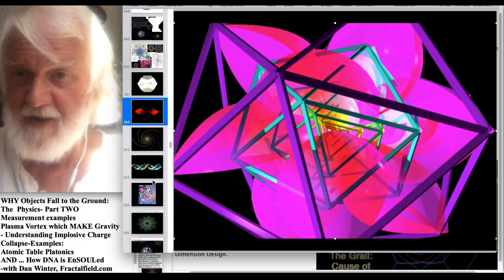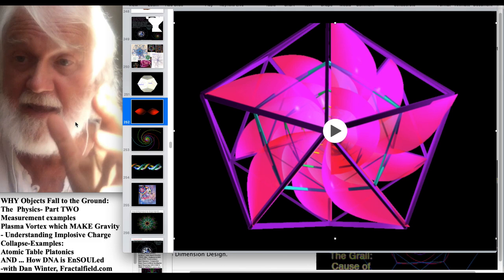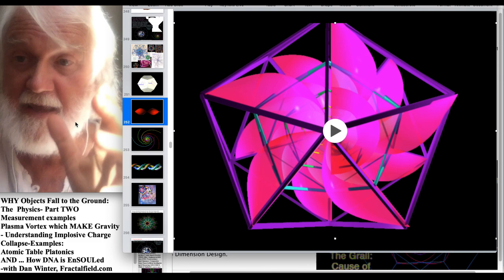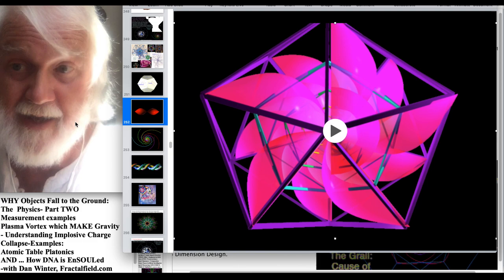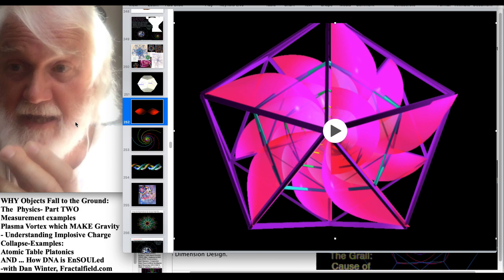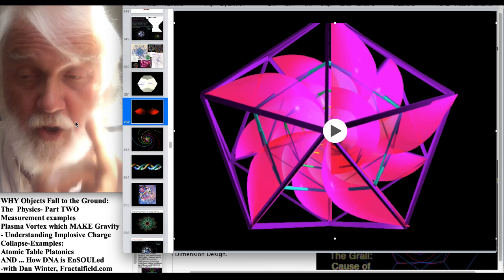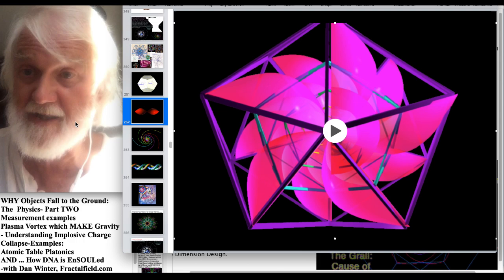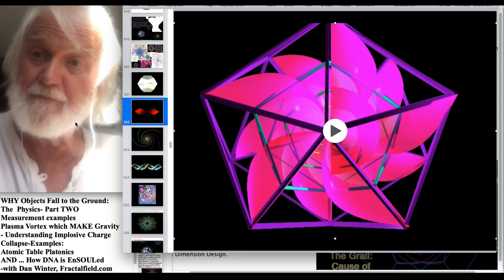Okay, so I think hopefully that's a happily ever after. So in summary, if you can visualize, visualize implosive perfect phase conjugate fractal charge collapse, not only can you visualize how all plasma vortex cones become centripetal and negantropic, you can then know why objects fall to the ground, the cause of gravity, and you can also know how DNA gets a soul, and you can see that perfected charge collapse in the platonic symmetries of the atomic table. That's the point.